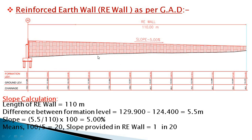This is a GAD — I am showing here only the RE wall portion of the GAD. This is actually the abutment, and from here the RE wall starts. The RE wall slope is five percent. The formation level is 129.9 at the abutment location and at the end of the RE wall the FRL is 124.4, so the difference is 129.9 minus 124.4, which is 5.5. This is the vertical difference and the horizontal length is 110 meters, so slope is 5.5 divided by 110, that is five percent.